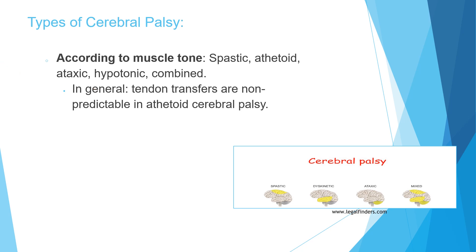According to types of muscle affection, cerebral palsy is classified into spastic, athetoid, and less common types: ataxic, hypotonic, or combined. By far the most common is spastic cerebral palsy, in which there is increased tone — spasticity — which is rate-limited, meaning the faster you move the muscle, the more the tone increases.